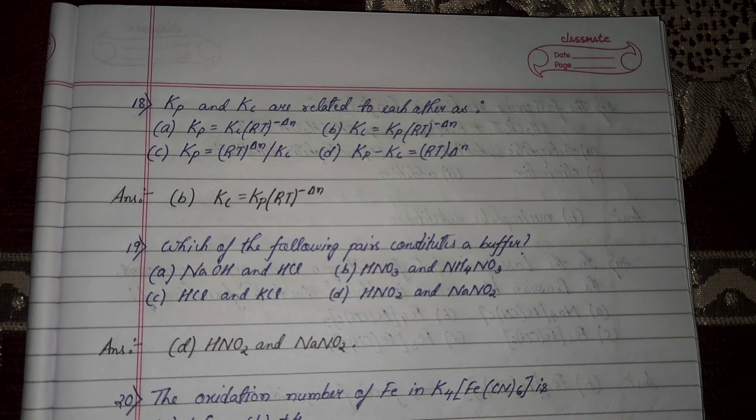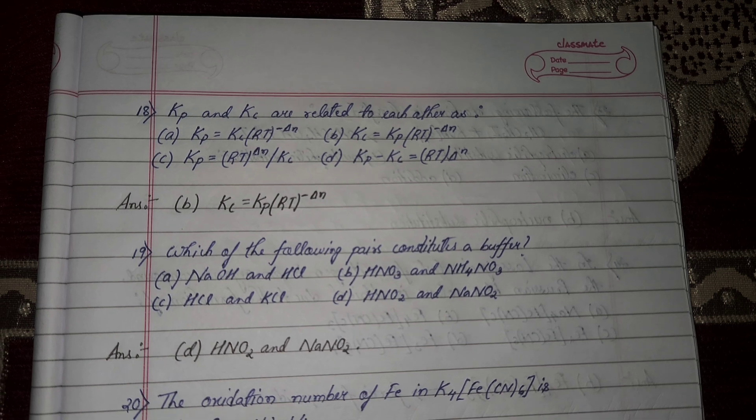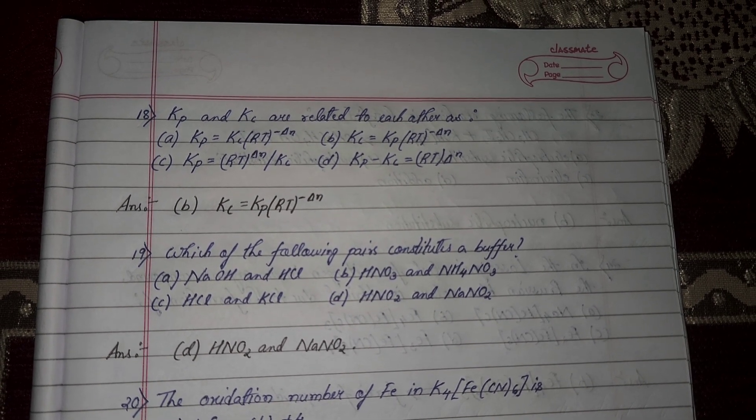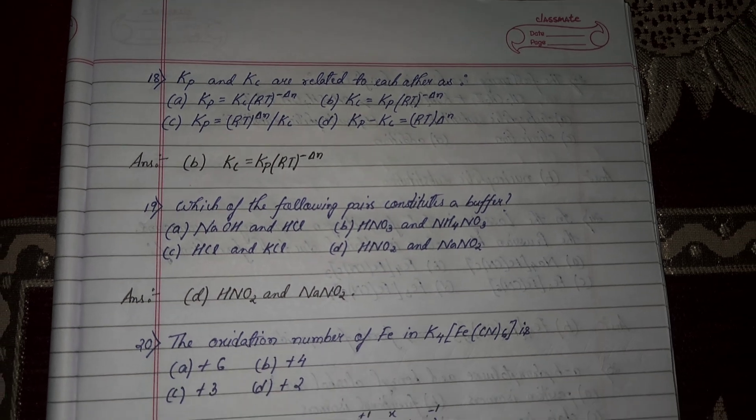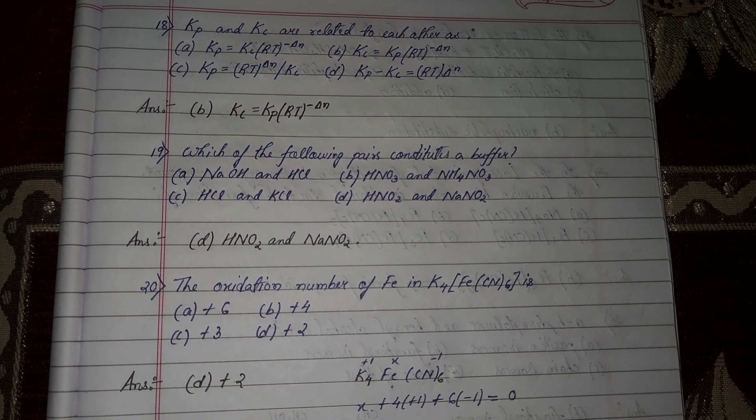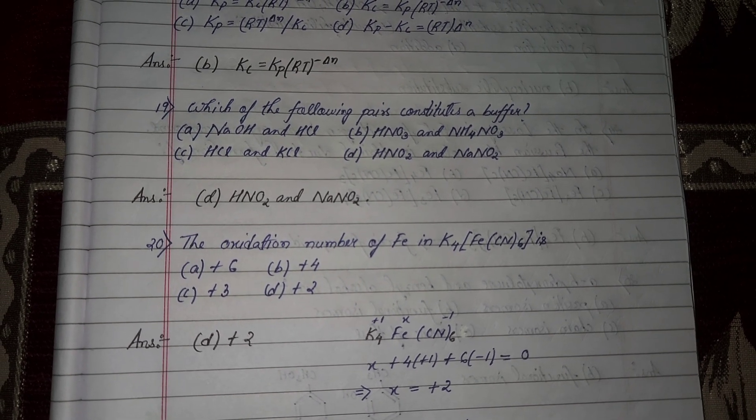Next question 18, Kp and Kc are related to each other as option number B, Kc equal to Kp RT to the power minus delta N. Next question number 19, which of the following pairs constitutes a buffer? It is HNO2 and NaNO2, option number D.